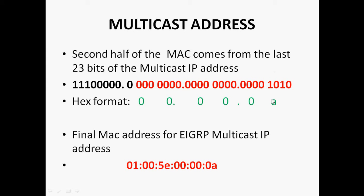In hexadecimal format, 1010 means you can write it as A. So now the final MAC address for the EIGRP multicast IP address is 01-00-5E-00-00-0A. So 01-00-5E-00-00-0A is the multicast MAC address for the EIGRP routing protocol.